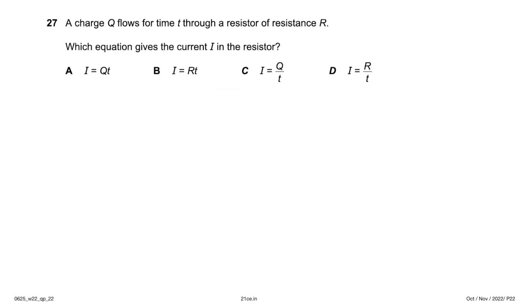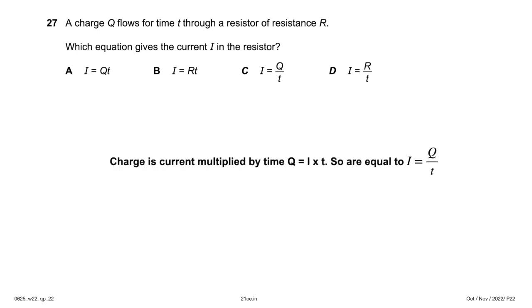A charge Q flows for time t through a resistor of resistance R. Charge = current × time, so Q = I × t, therefore I = Q ÷ t. Answer: option C.